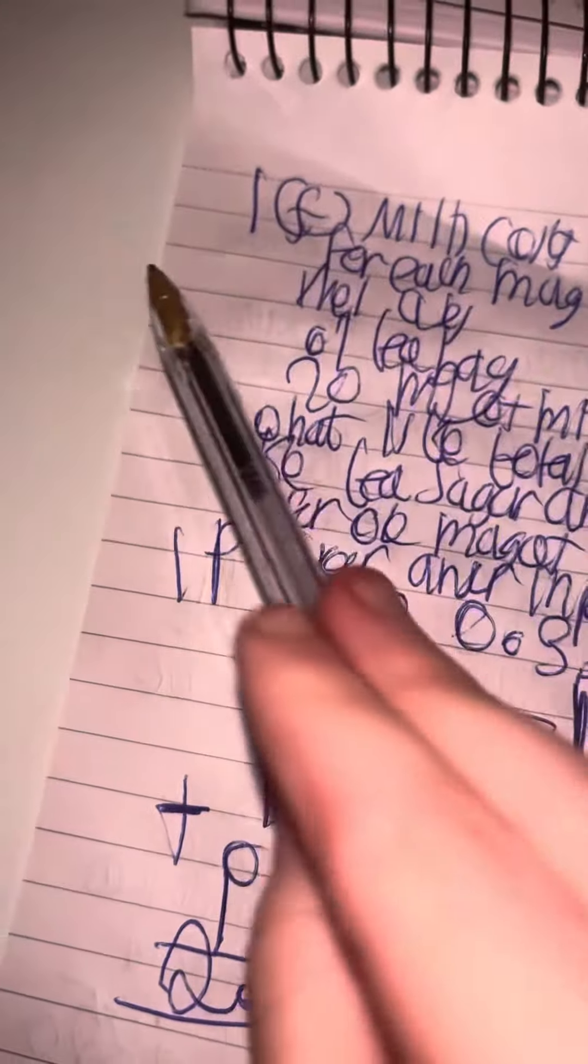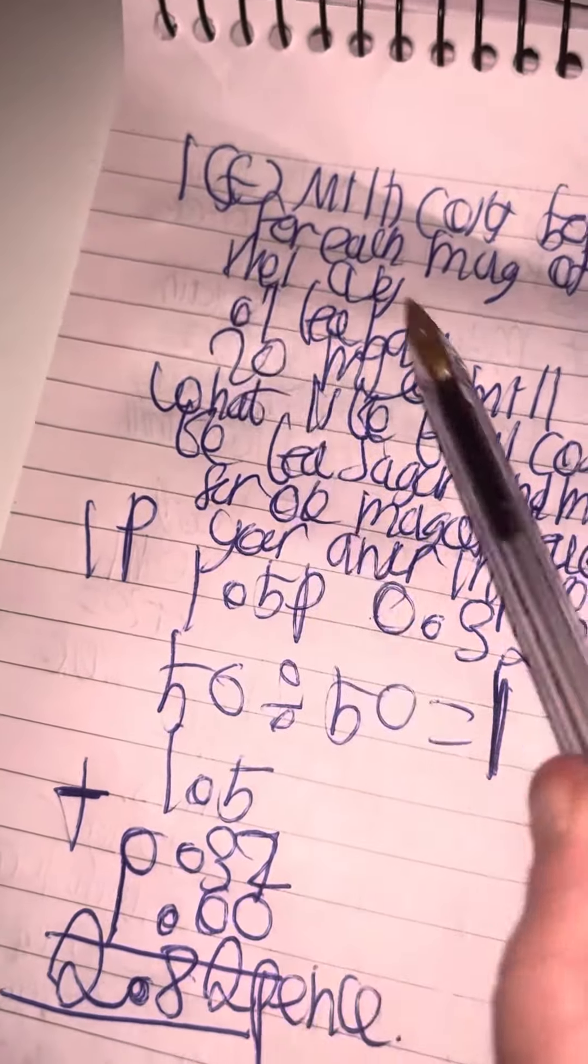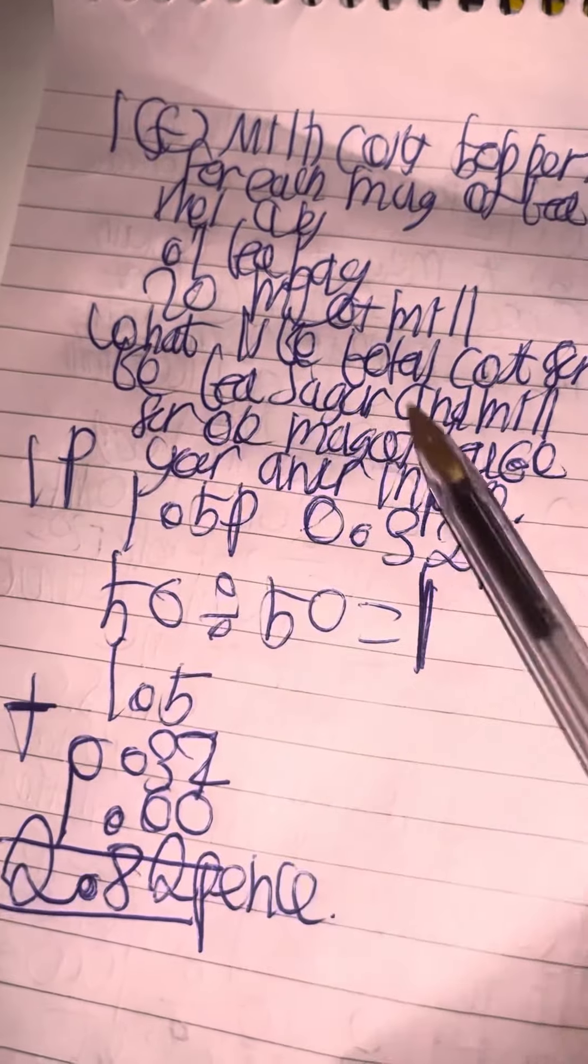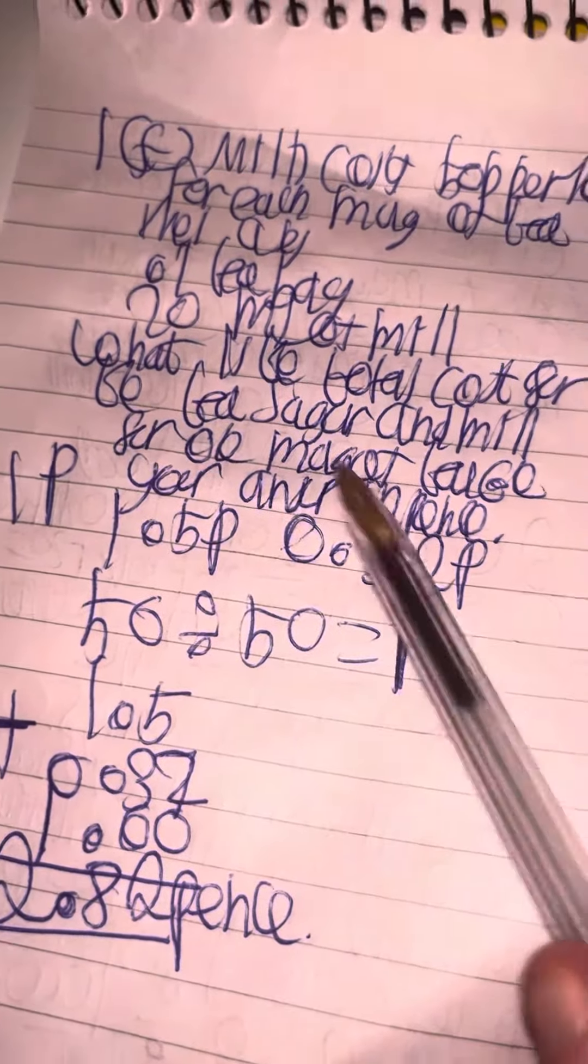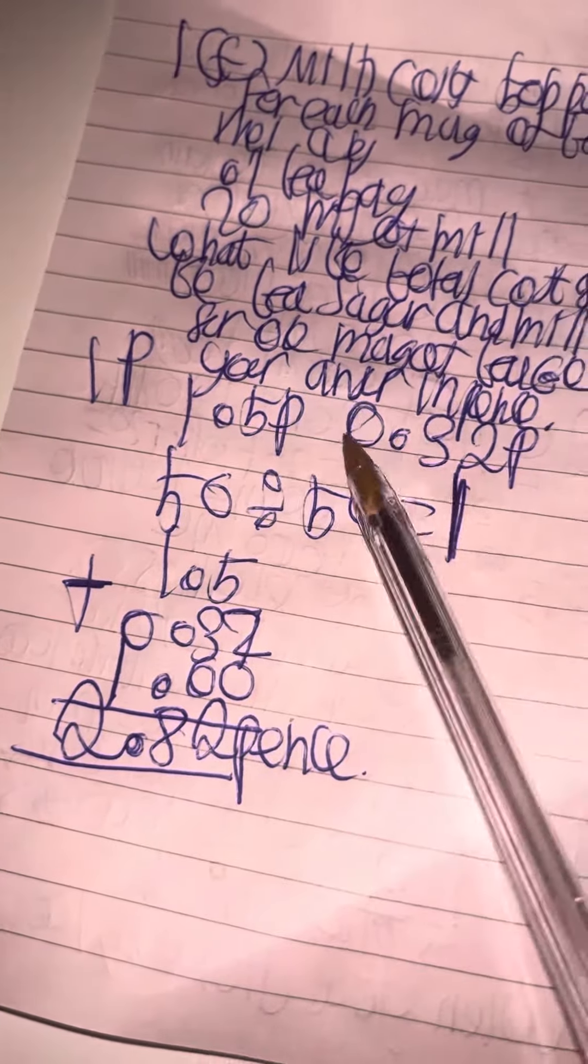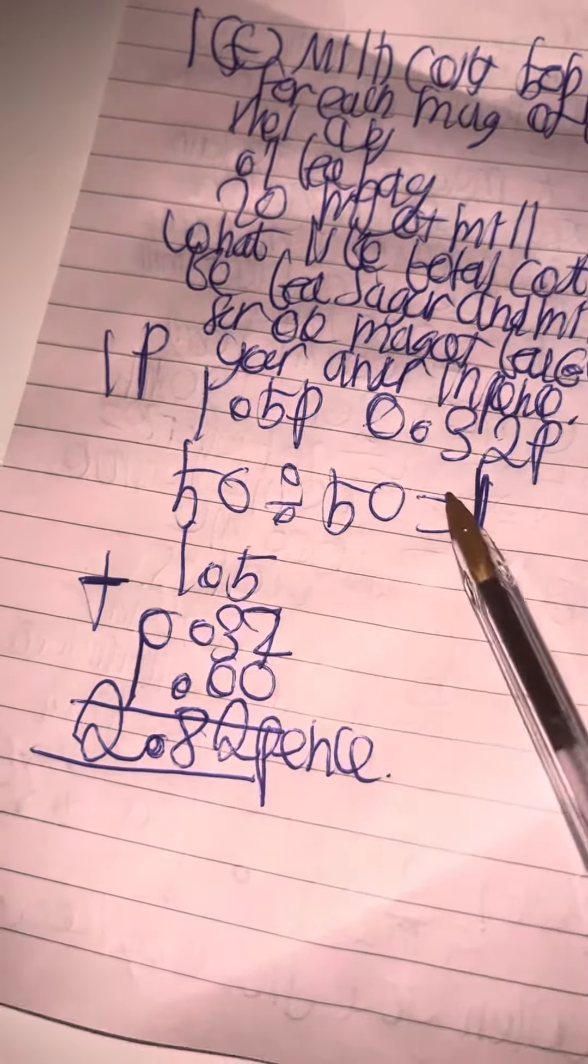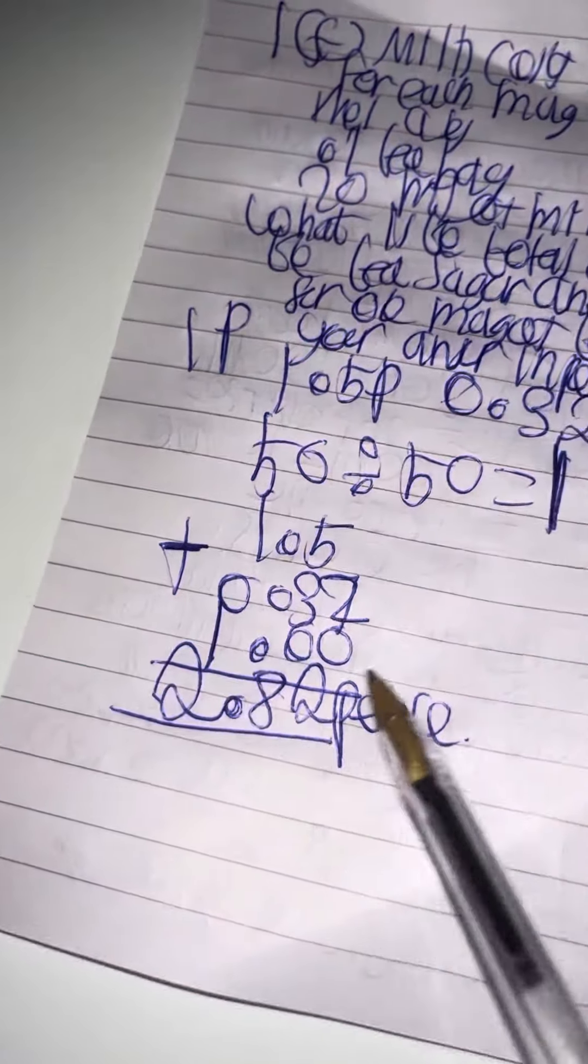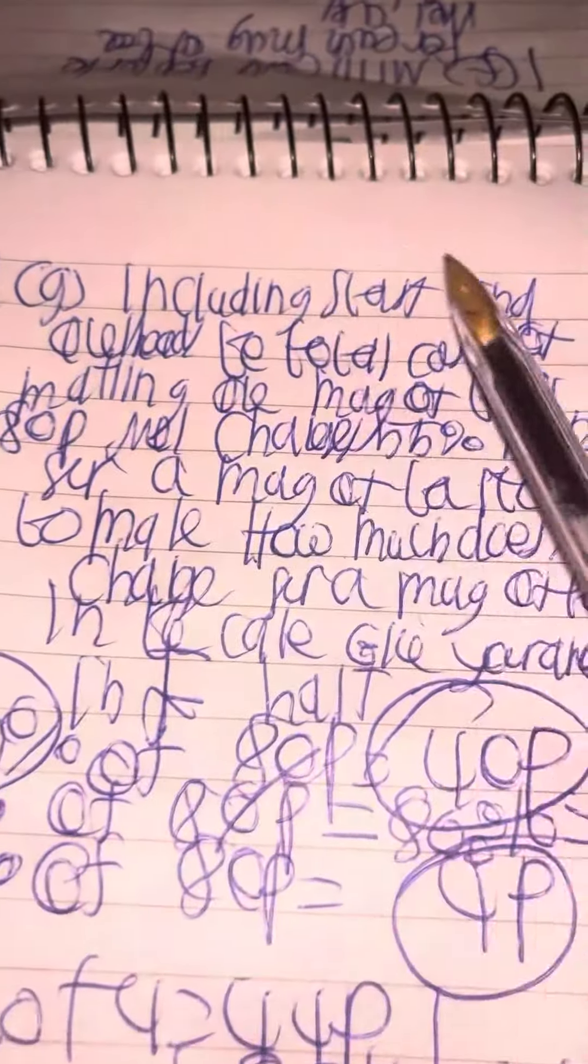What is the total cost for the tea, sugar, and milk for a mug of tea? Give your answer in pence. So one-fifth is going to be 0.3, so 50 by 50 is 1, so 1.5 by 32 add 1 is 2.82 pence.